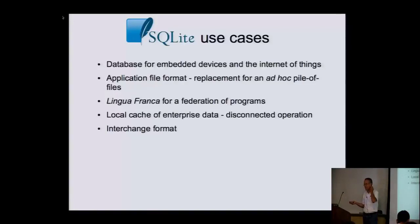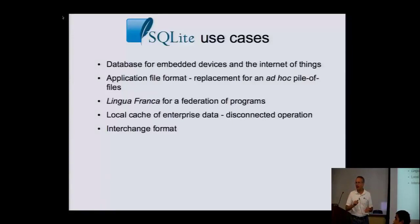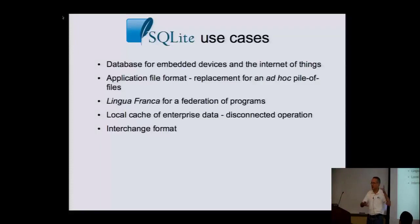SQLite is also good as an application file format. If you're doing a traditional desktop application and instead of doing file save and writing out a bunch of XML, make it a database — you get all this powerful query language and transactions. It's great for what I call the lingua franca of a federation of programs. You've got a bunch of graduate students working on a problem, writing in Python, C++, Ruby, PHP — all these guys are doing different programs but they all have to talk to each other. Why not use an SQLite database file as your common mode of communication?